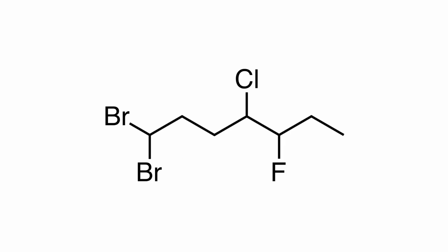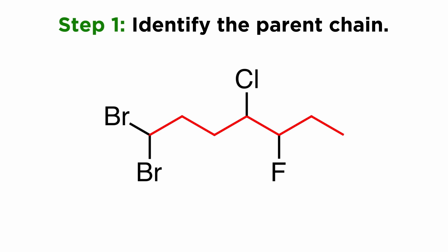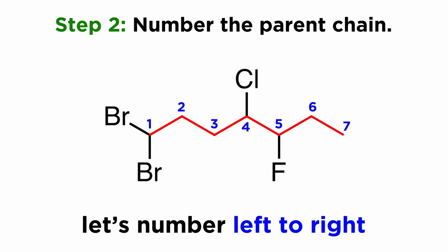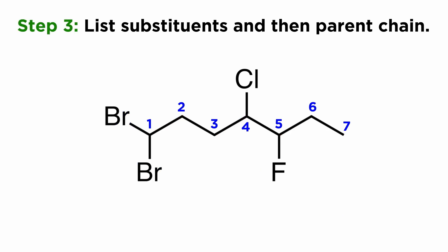Take a look at this molecule. As always, let's identify the parent chain. In this case that's easy — it's just this 7-carbon straight chain, so this is a heptane. We will number from left to right, because we have two substituents occurring on carbon 1, as opposed to the other way, which would give the first substituent on carbon 3.